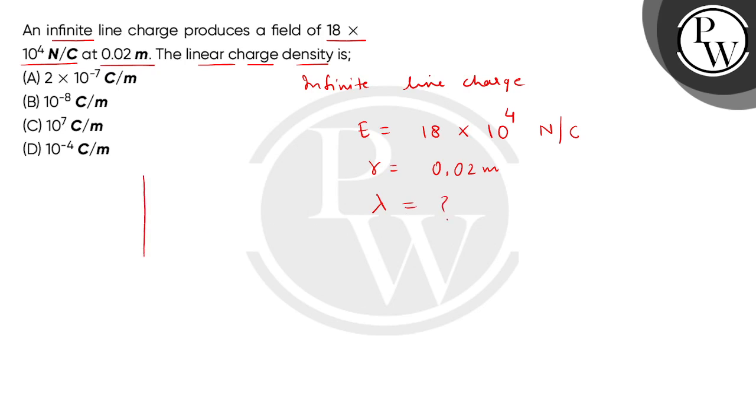If we consider a figure here, let this be the infinite line charge and this is r distance to point P where the electric field is 18 multiplied by 10 to the power 4 N per coulomb and distance is 0.02 m.